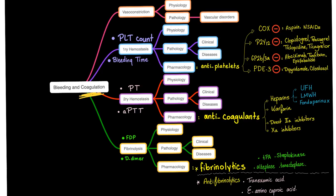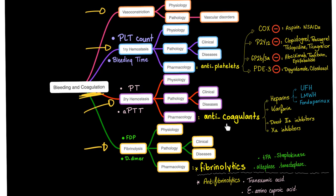Coagulation involves vasoconstriction, primary hemostasis, secondary hemostasis, and fibrinolysis. To destroy primary hemostasis, use antiplatelets. To tamper with secondary hemostasis, you can use anticoagulants. We've talked about antiplatelets in previous videos. Heparin is done, warfarin is done — today it's time for direct thrombin inhibitors and factor XA inhibitors.